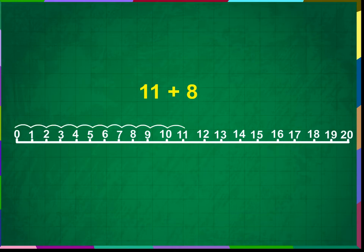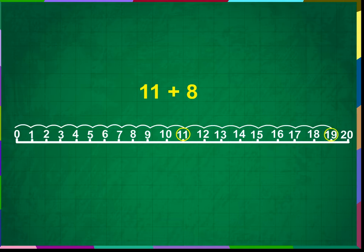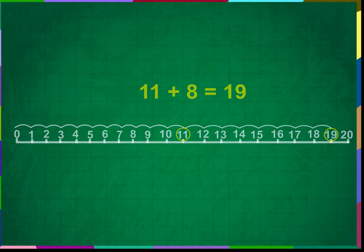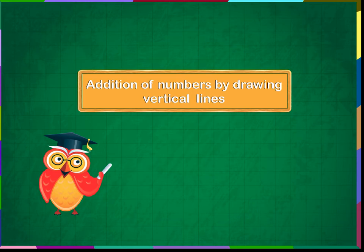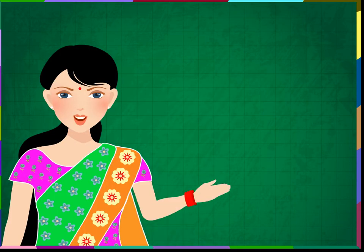Add 11 plus 8. Let us start from 0 and go up to 11. Let us now count eight more numbers and take small jumps. We have reached 19. Therefore, 11 plus 8 is equal to 19.